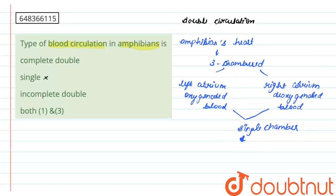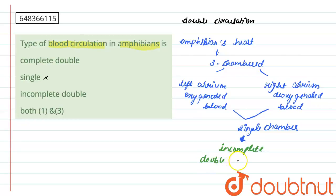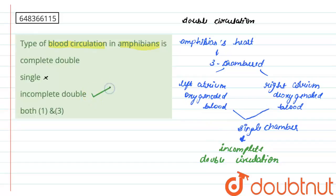This leads to the conclusion that amphibians have incomplete double circulation. Since they only have three-chambered hearts — one chamber receives oxygenated blood, the next receives deoxygenated blood, and one chamber receives mixed blood — this results in incomplete double circulation. The correct option is number three: incomplete double circulation.